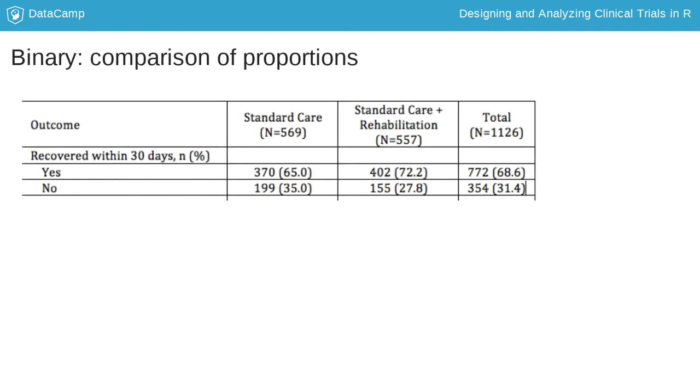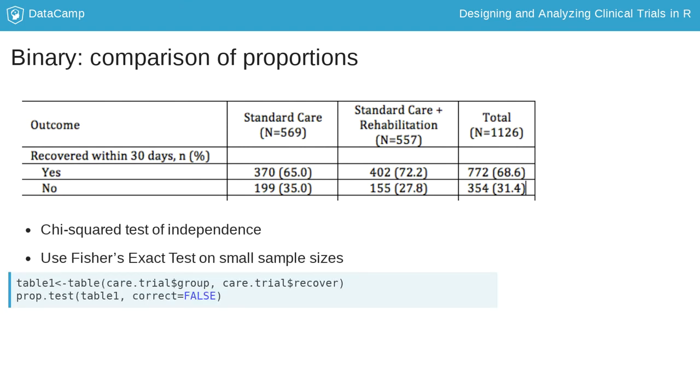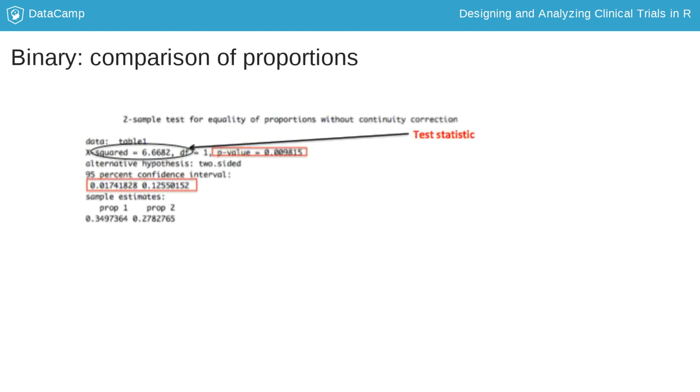Finally, with binary outcomes, we can test the null hypothesis of equal group proportions with the chi-squared test. We use the prop.test and table functions, specifying the treatment group and response. This produces a test statistic that is compared to the chi-squared distribution.